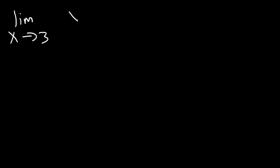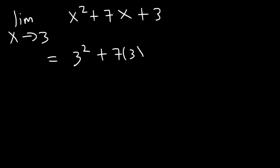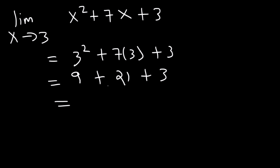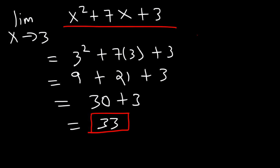What is the limit as x approaches 3 of the function x squared plus 7x plus 3? The first thing you should try is direct substitution — plug in 3. If you don't get a 0 on the bottom of a fraction, you should be fine. In this case there's no fraction, so we can use direct substitution: 3 squared plus 7 times 3 plus 3 equals 9 plus 21 plus 3, which is 33.